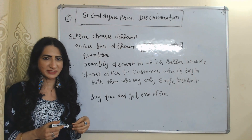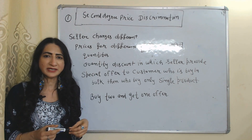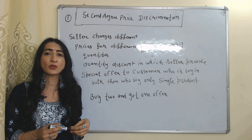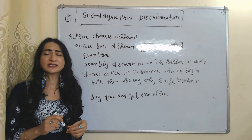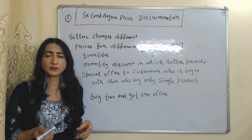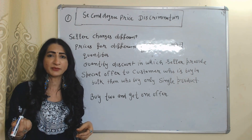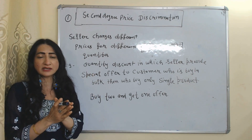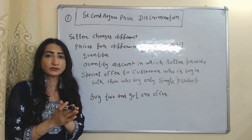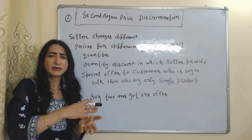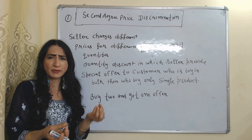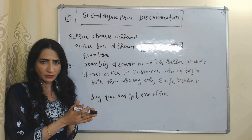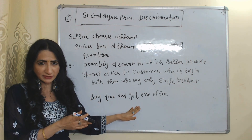Second degree price discrimination means where the seller charges different prices for different quantities. For example, quantity discounts — where the seller provides a special offer to customers who buy in bulk, but no discount for customers who buy only a single product. For example, a buy-two-get-one offer is called second degree price discrimination.